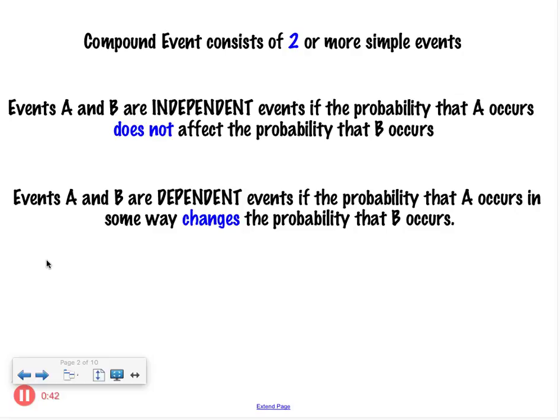If an event is independent, then the probability of A occurring does not affect the probability of B occurring. So they have nothing to do with each other. They don't change the outcome of the other one.